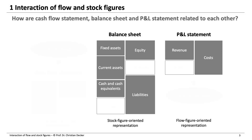The profit and loss statement can be interpreted as a sub-account of the equity account, which, as a flow-figure-oriented representation, determines the profit of the year for one period. It thus explains the change in equity between two balance sheet dates.